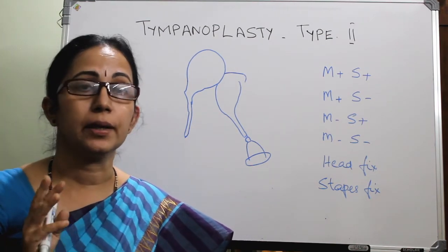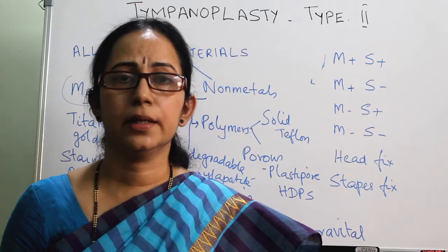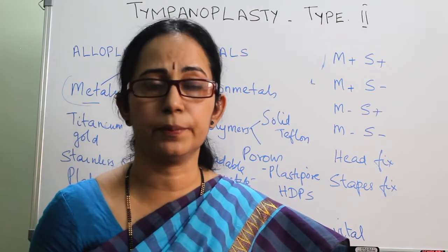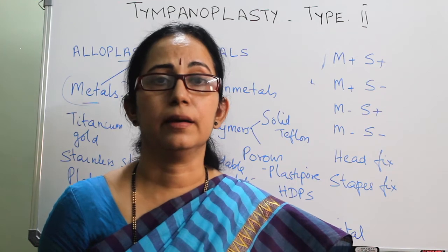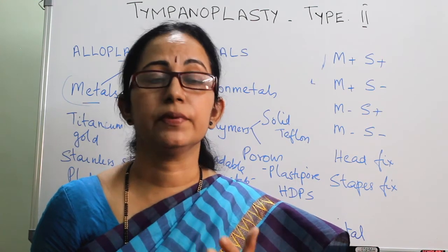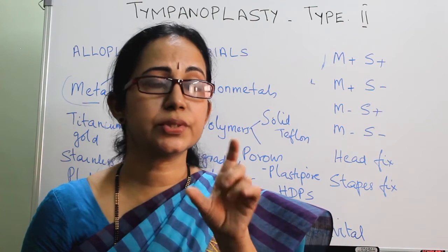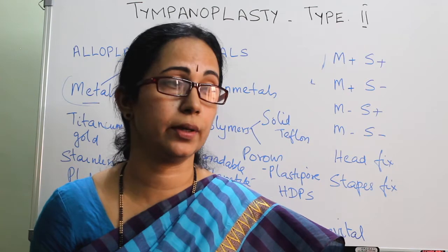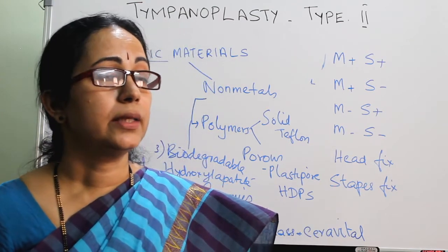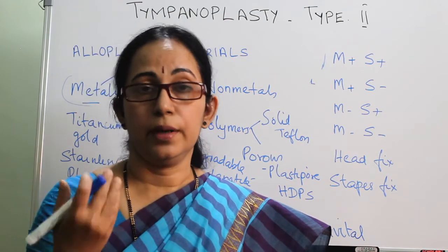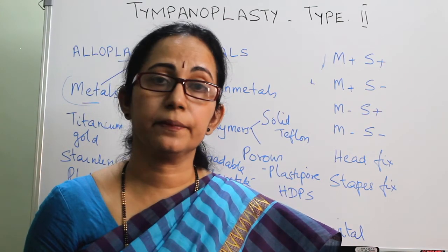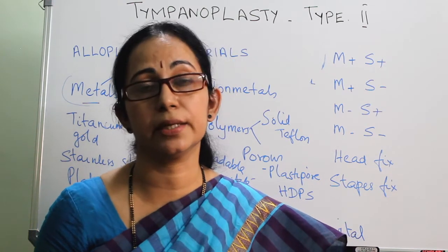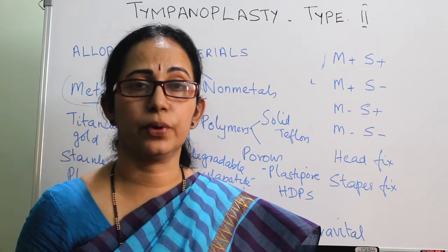The approach, as described in part 2 of tympanoplasty, can be a trans-canal approach with elevation of the tympanomeatal flap. If you use a Shea speculum holder, both hands will be free. If the canal is very narrow, a post-aural approach is preferred. If there is difficulty seeing the anterior recess because of a bulge in the anterior canal, you have to go for a canalplasty also.